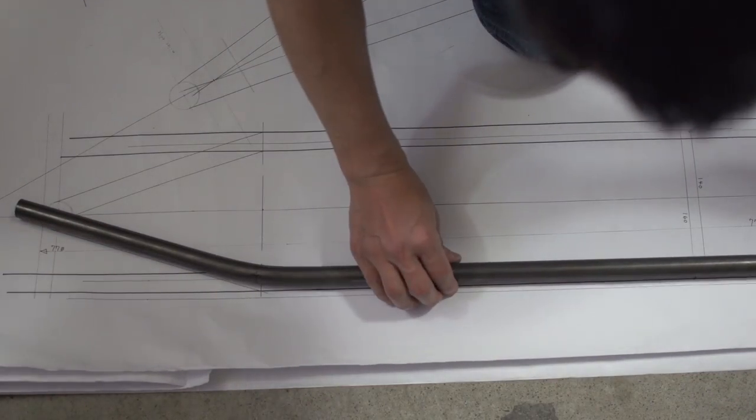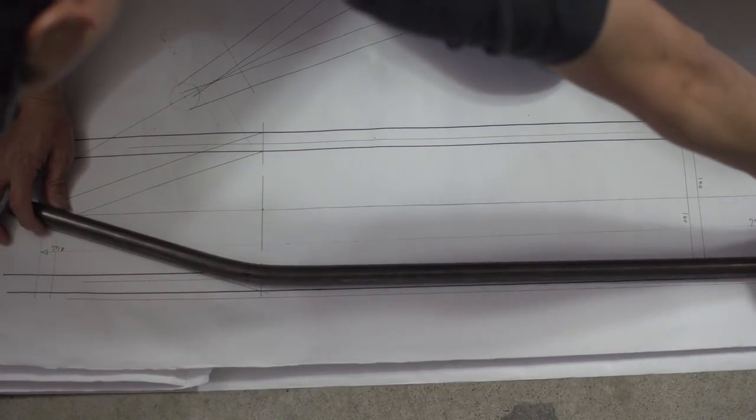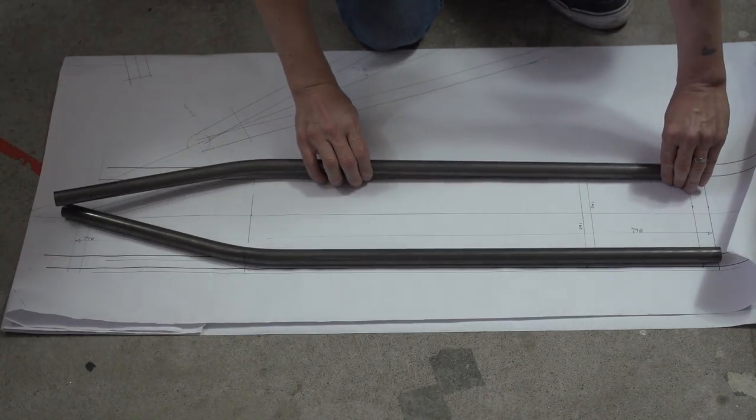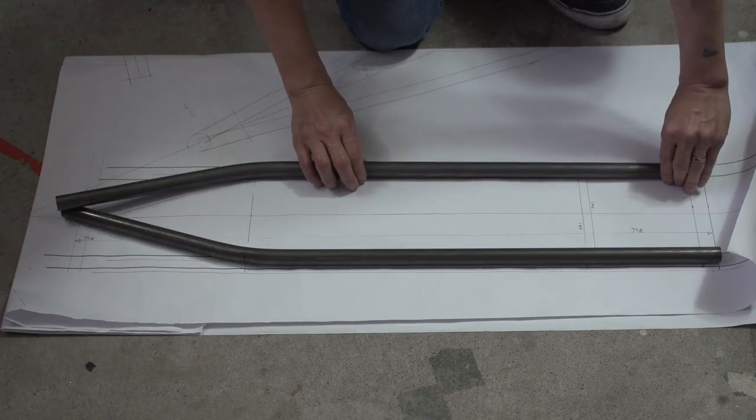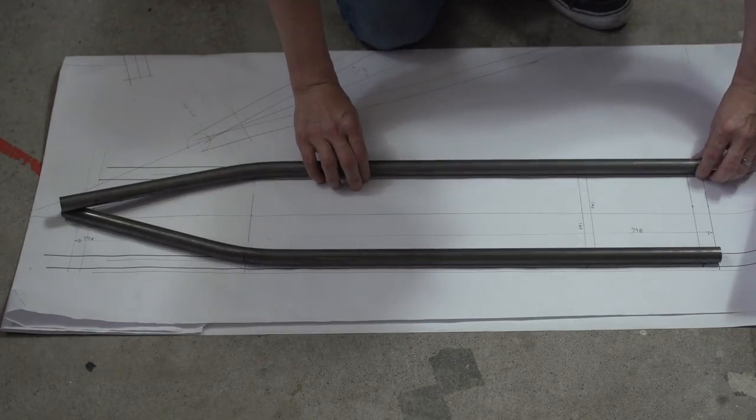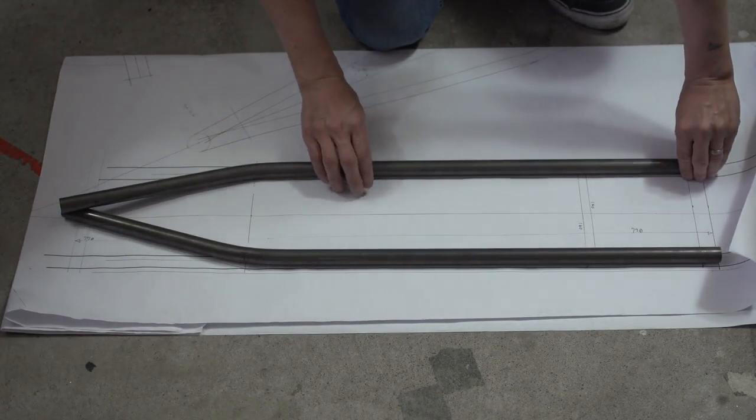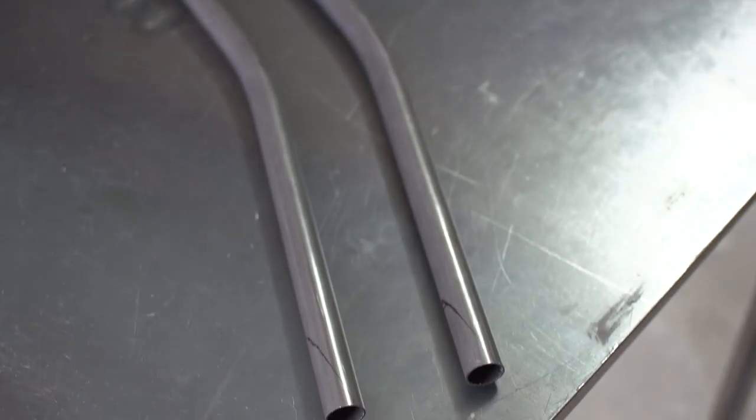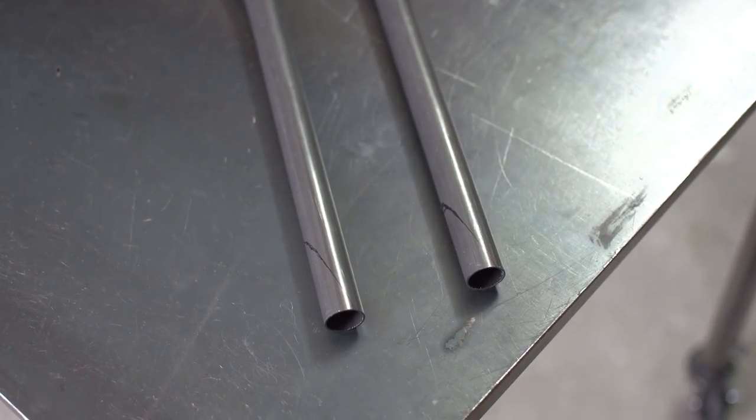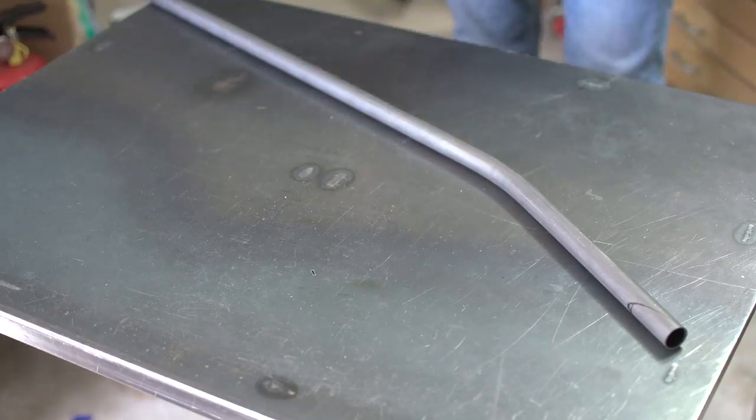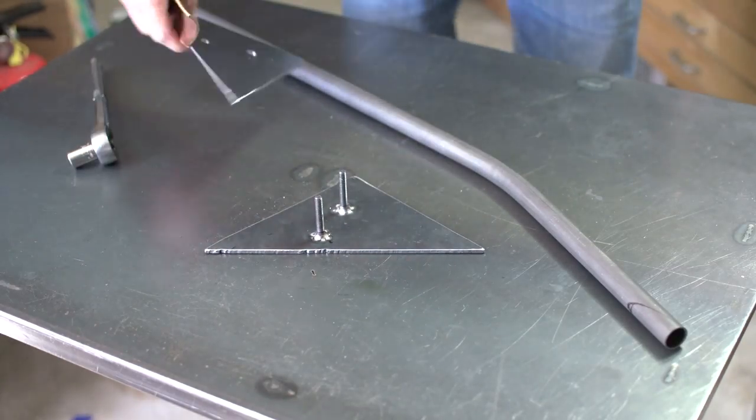Looks like we need to go just a bit more. And that looks like it did the trick. Okay, so here you can see the tubes overlap. We need to trim so that we're set up properly for a miter, and that means no overlap. So I marked the tubes roughly where we need to trim.